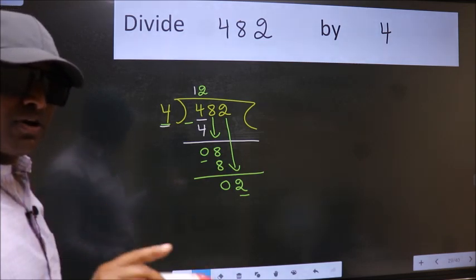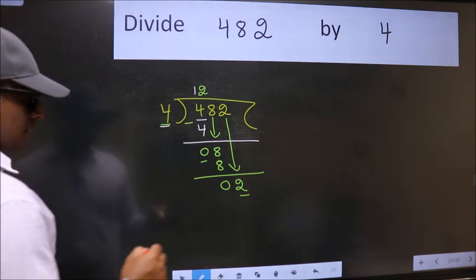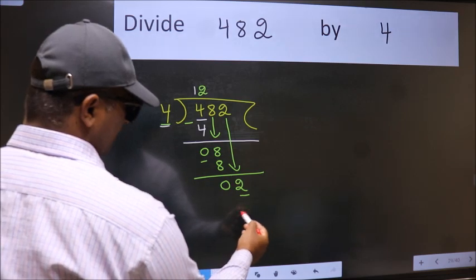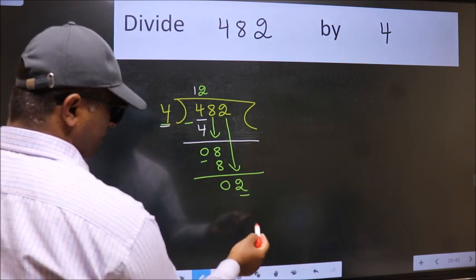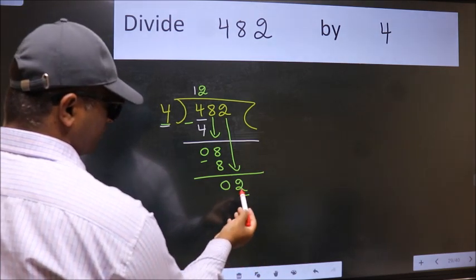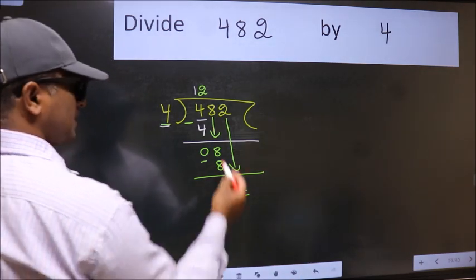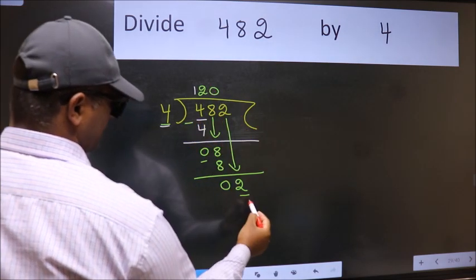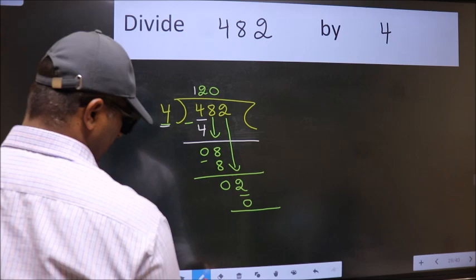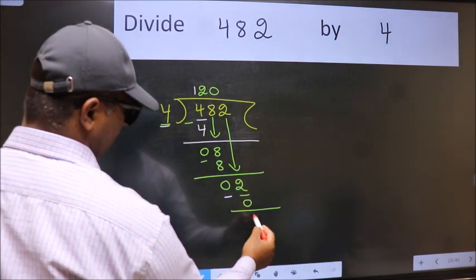Instead of that, what we should think of doing is which number should we take here. If I take 1, we will get 4. But 4 is larger than 2. So what we do is we take 0 here. So 4 into 0. Now we subtract. We get 2.